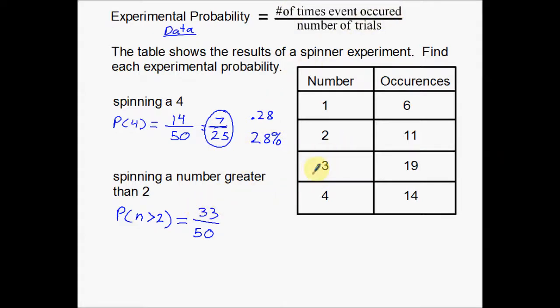33 is the number of events that occurred that I want. I want 3's. I want 4's. Those are the numbers that are greater than 2. So I have 33 of them over a total of 50 that occurred. And now there's no reducing that I have to do there. So that is my total probability. You can also write that as 0.66 or 66%. Either way works.